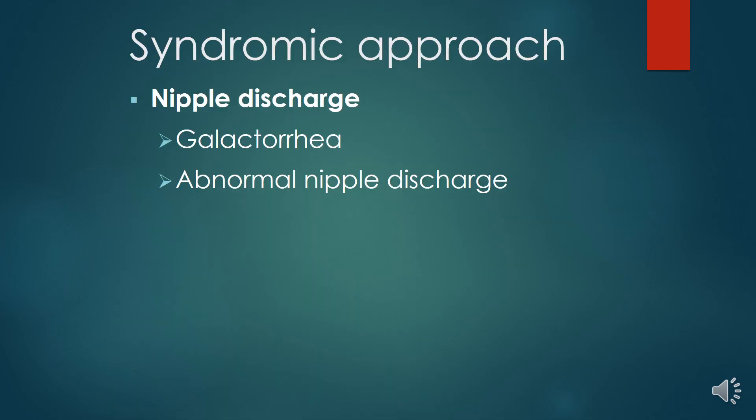If there is nipple discharge, it could be a white discharge, abnormal discharge, bloody discharge, or purulent discharge. On the basis of the type of discharge, conditions can be divided and managed accordingly.